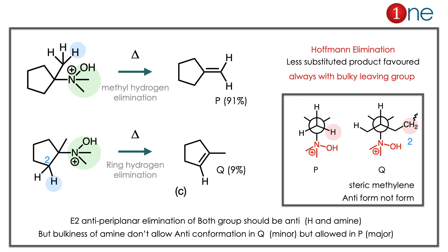The methyl hydrogen leaving gives product P; the ring hydrogen leaving gives product Q. This elimination is called Hofmann elimination. The less substituted product is formed because a bulky leaving group always leads to Hofmann elimination. Here the quaternary ammonium salt attached with methyl groups is bulky. This can best be understood by steric effects: you have to write the conformation, and the leaving group should be anti — because it follows an E2 mechanism. For E2, leaving groups must be anti-periplanar to each other.